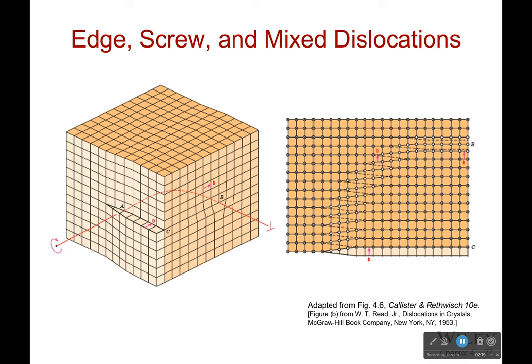These kinds of dislocations can be mixed — it doesn't have to be one or the other. We can start as a screw dislocation and transition all the way to an edge dislocation. The interesting thing is that the Burgers vector will be constant for this single mixed dislocation — no matter where it is, we're always going to have the same Burgers vector.